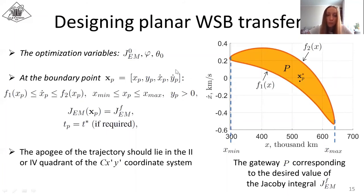So at the boundary point, the following conditions should be met, and also the apogee of the trajectory should lie in the second or fourth quadrant of the CX'Y' reference system. It means that the problem of getting through the gateway is reduced to the nonlinear programming problem with identically zero functional and corresponding nonlinear constraints. If a certain point of the gateway should be targeted, one more equality constraint should be added.